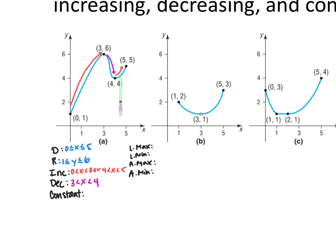The graph is also increasing from x = 4 up to x = 5. For decreasing, as we read left to right the y's are going down in between, so 3 < x < 4. In this case, there are no sections where it is constant — no sections where it's neither increasing nor decreasing.